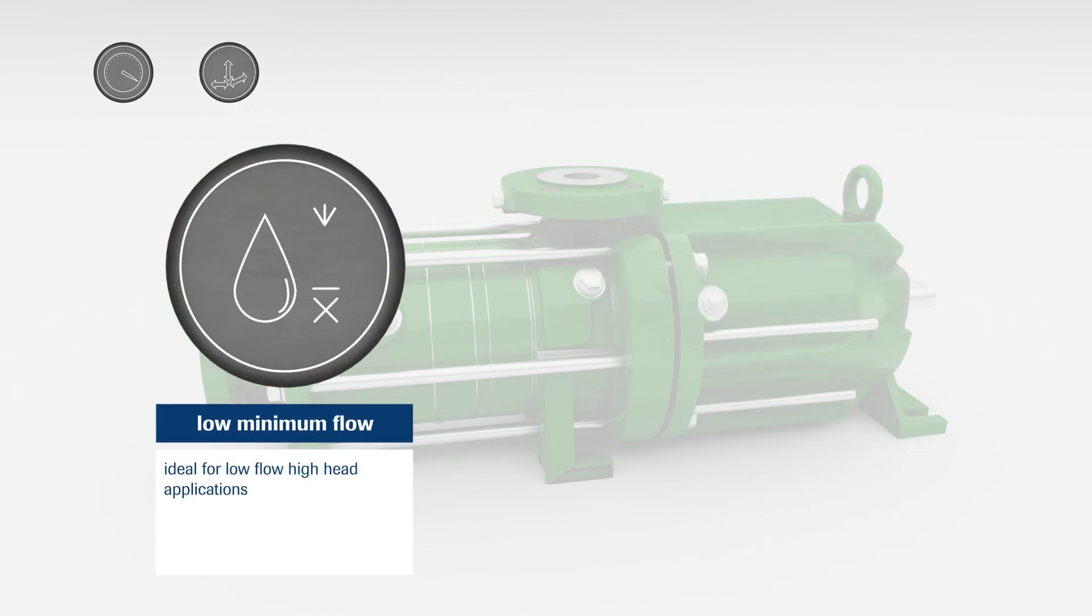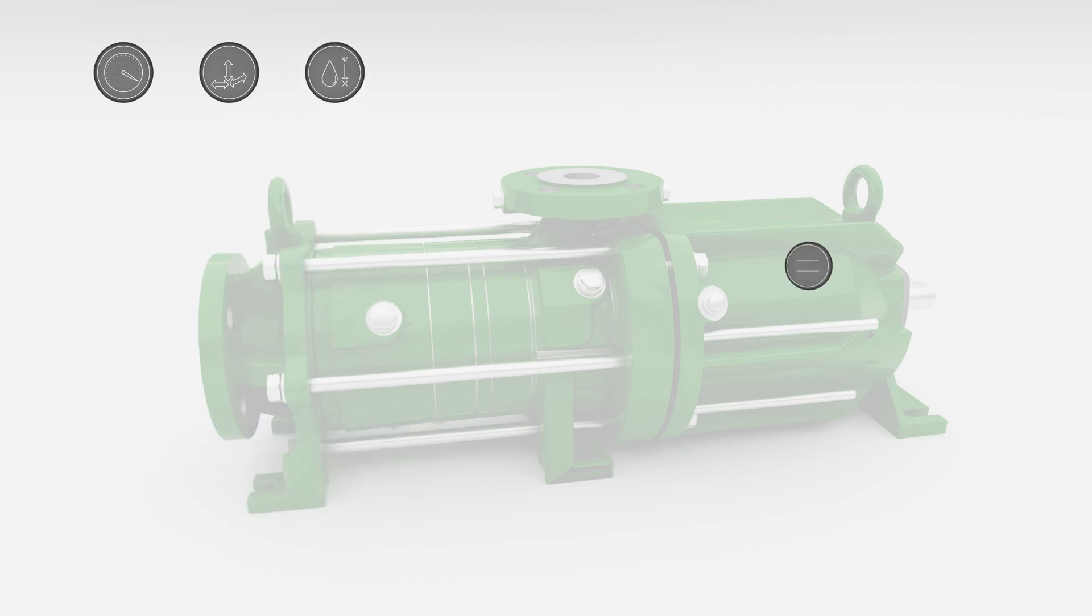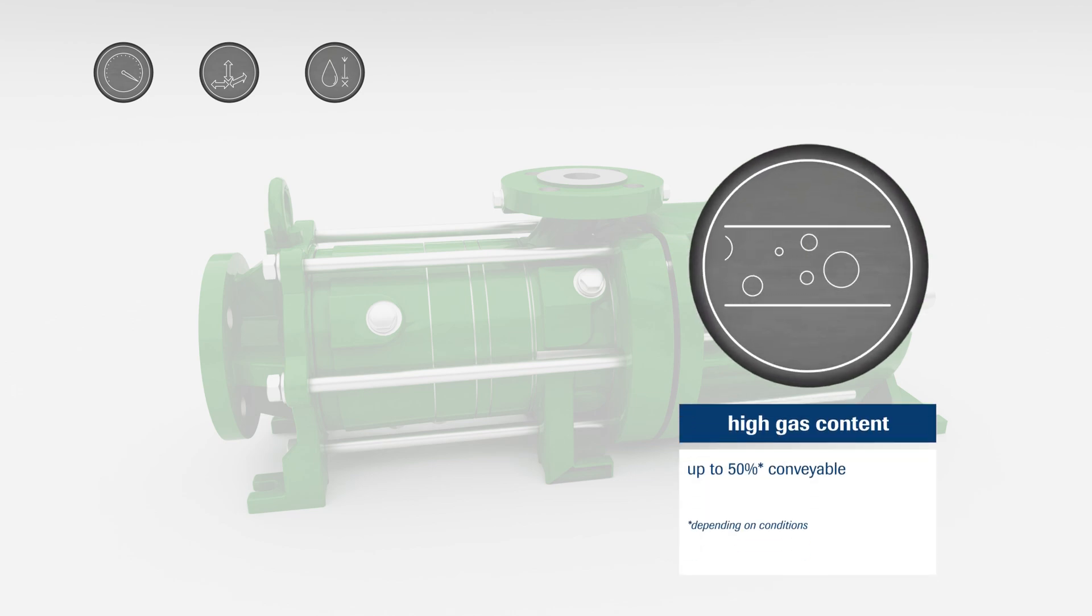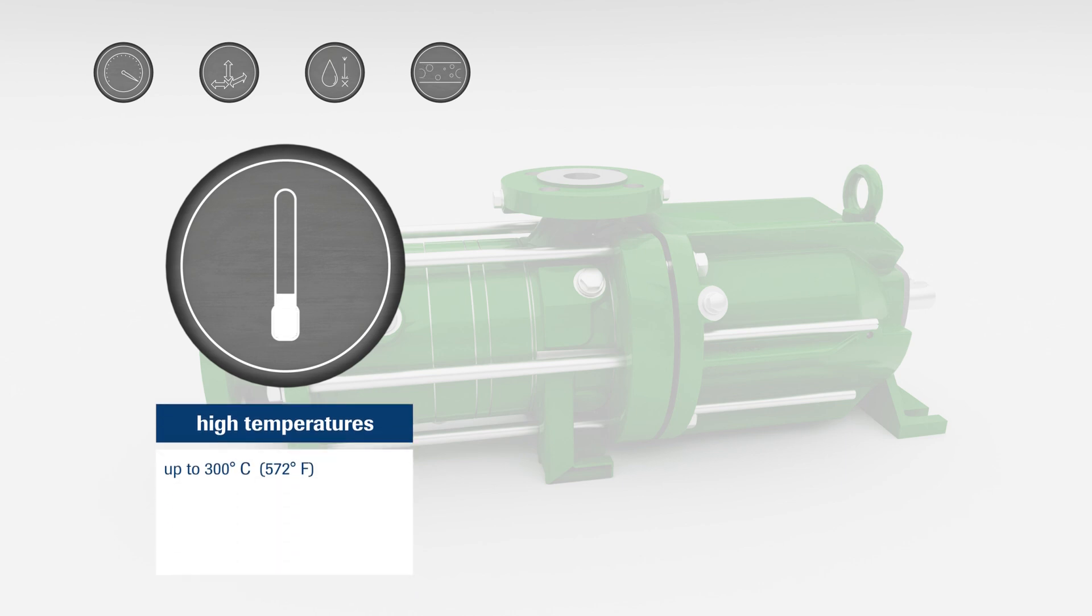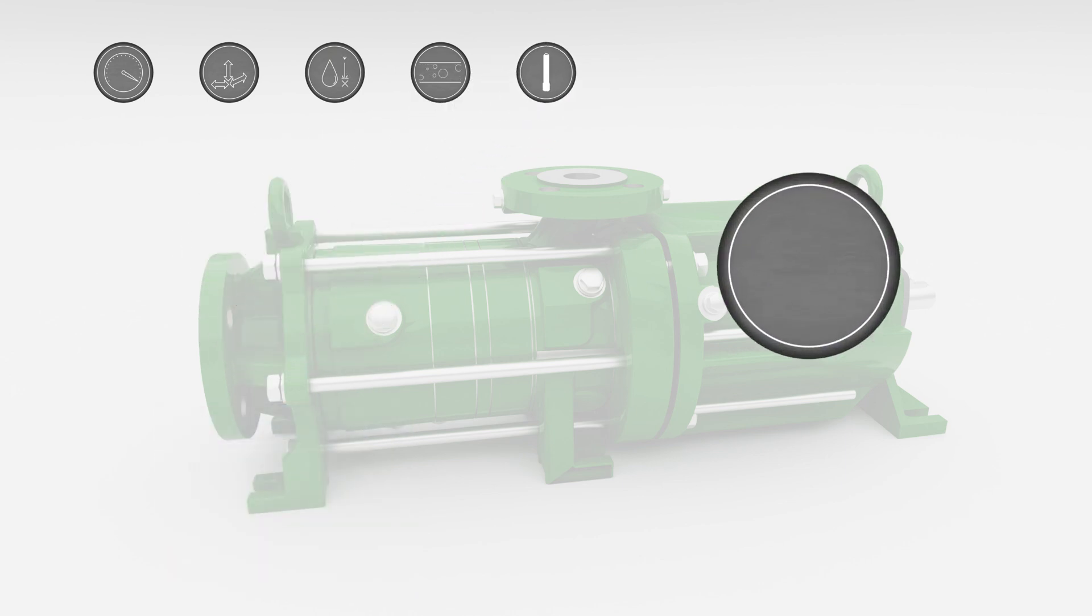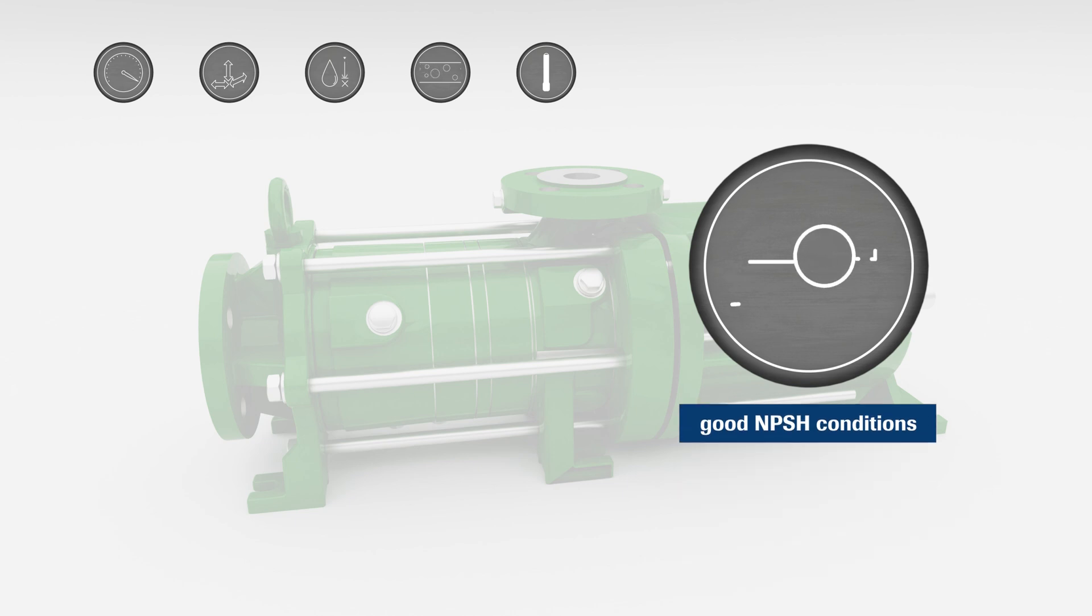Peripheral impeller pumps such as the TPM are ideal for low flow high head applications. Up to 50% gas content can be pumped depending on the conditions. High temperature applications up to 300 degrees centigrade are possible. Good NPSH properties are possible thanks to suction impeller and axial inlet.